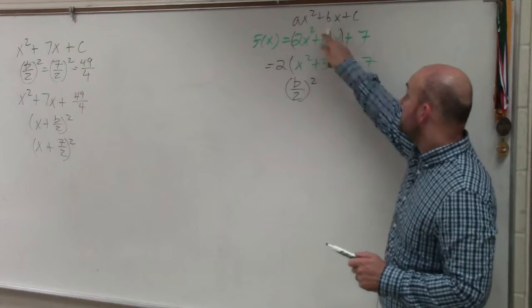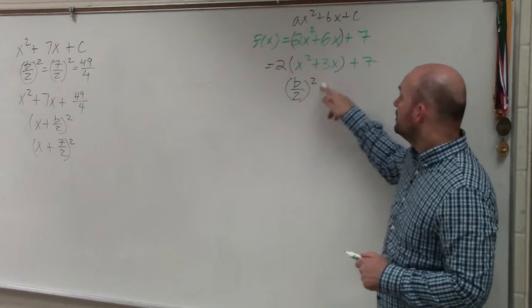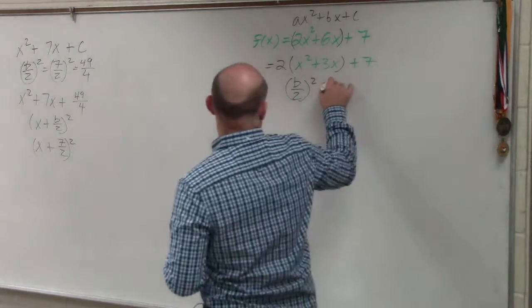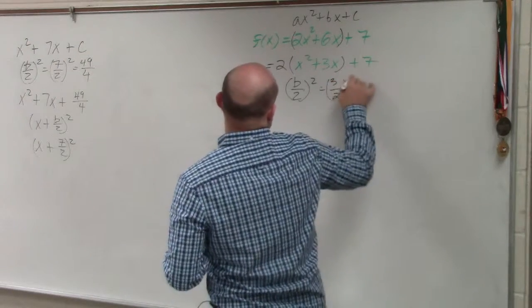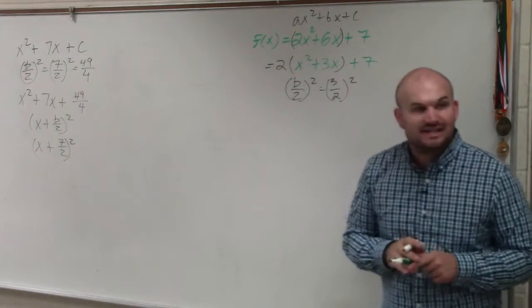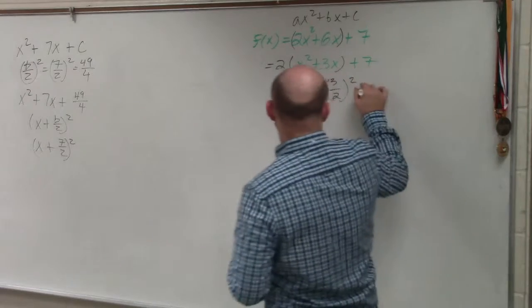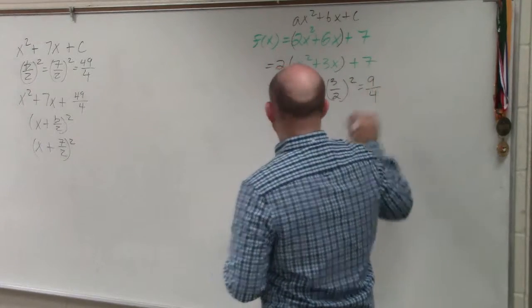Please make sure you use this b, not the b from the original equation. So in this case, I'm going to have 3 divided by 2 squared. Since 2 does not divide into 3 evenly, I'm going to leave it as is. So I'll leave that as 9 over 4.